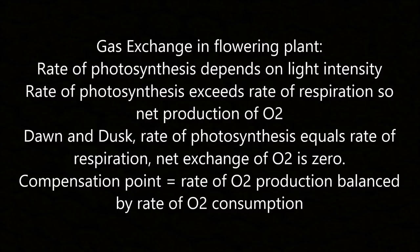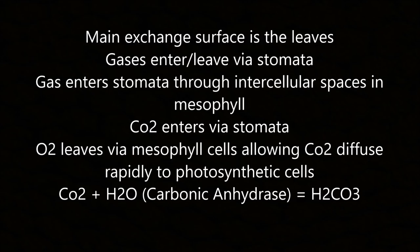Gas exchange in the flowering plant: the rate of photosynthesis depends on light intensity. When photosynthesis exceeds respiration there is net production of O2. At dawn and dusk the rates are equal and net exchange of O2 is zero. The compensation point is when O2 production is balanced by O2 consumption. The main exchange surface is the leaves, where gases enter and leave via stomata through intercellular spaces in the mesophyll. CO2 enters via stomata and O2 leaves via the mesophyll cells.